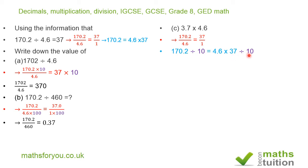Because I've divided the right-hand side by 10, I must also divide the left-hand side by 10. If you divide 170.2 by 10, you get 17.02, and if you divide 37 by 10, you get 3.7. Therefore, 17.02 equals 4.6 times 3.7.